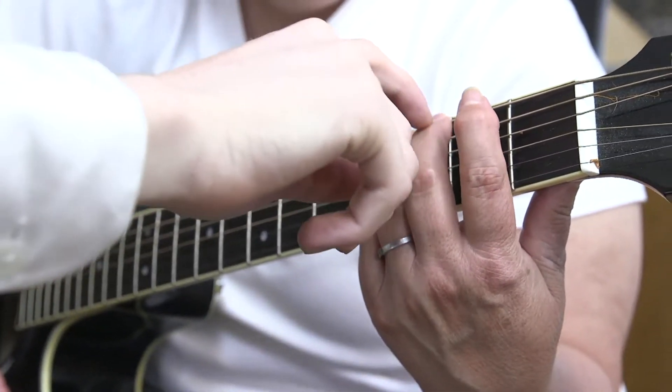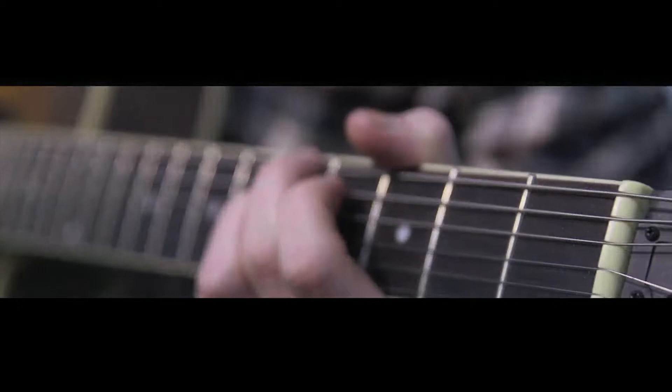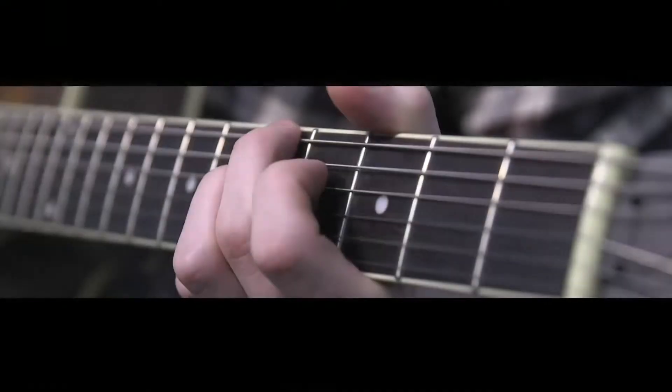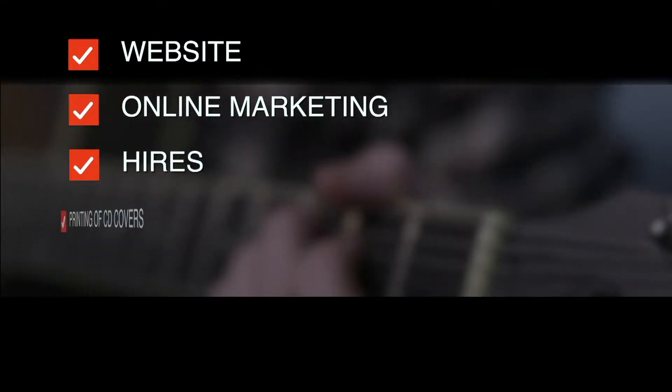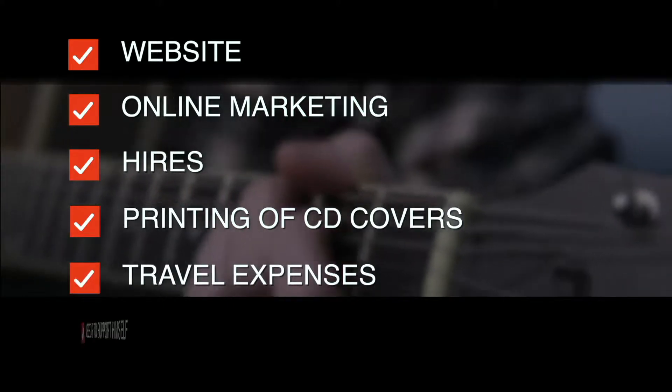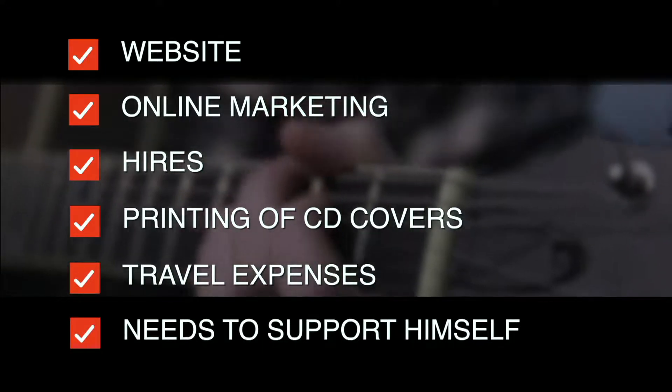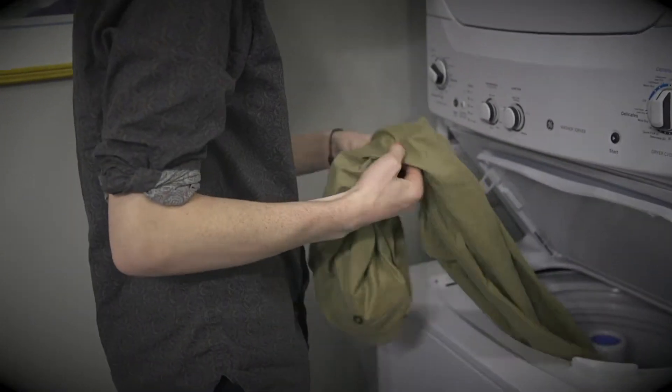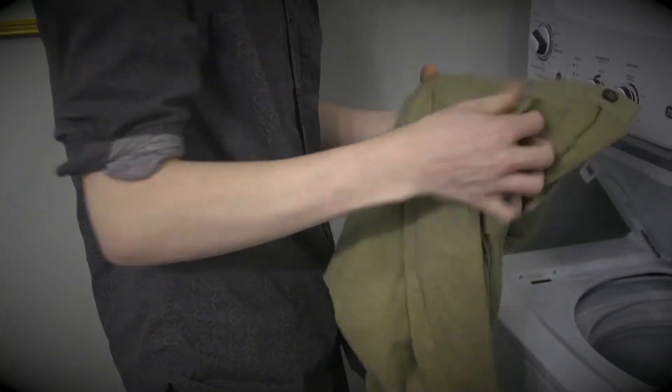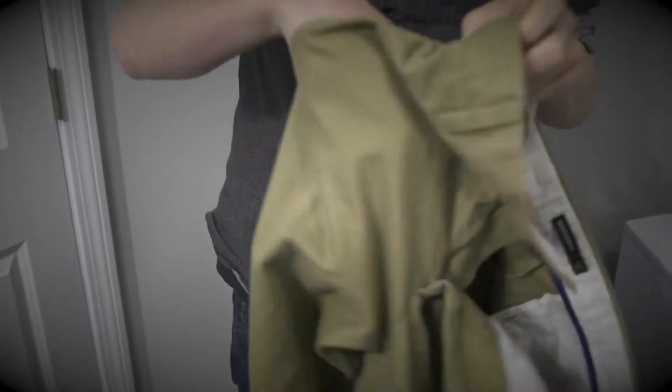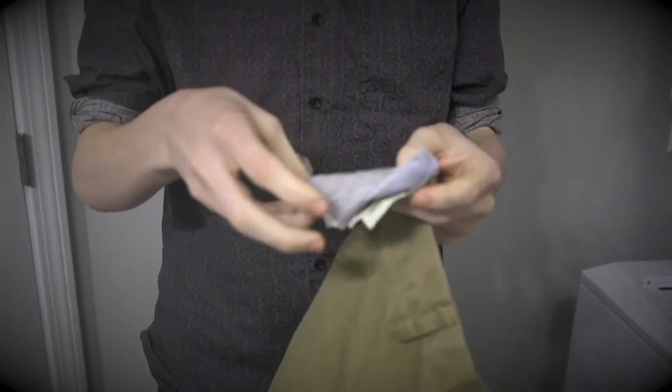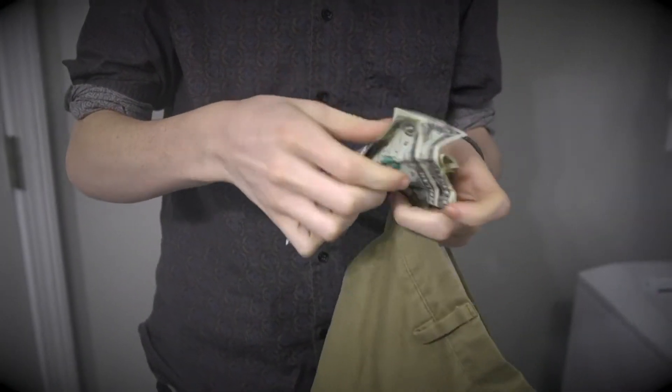Anthony's business also has expenses. Expenses are payments for the things he needs to operate the business. Any business has expenses. For example, Anthony has to pay for his website, online marketing, the people he hires to help at his shows, printing of CD covers, travel expenses, and he needs to support himself. At first, Anthony did not keep accurate records. When his students paid him, he'd put the cash and checks in his pockets. Sometimes, he'd forget to take the money out, and they'd end up lost or in the wash.